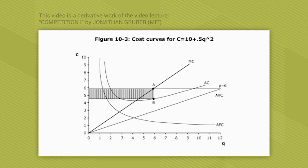So what does the firm do? It chooses to produce where marginal cost equals price. When it produces where marginal cost equals price, then what profits does it make?